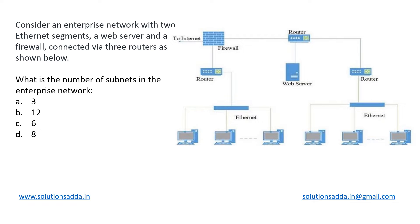This is a computer networking question. A network diagram has been given to us for an enterprise network and they are saying that it has two ethernet segments. Let us call them segment 1 and segment 2.